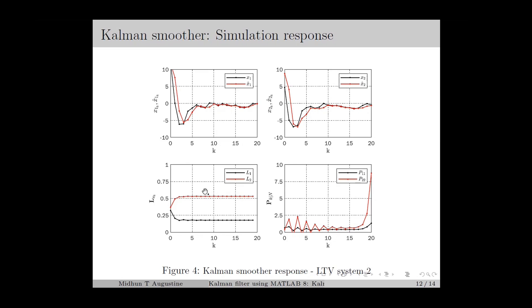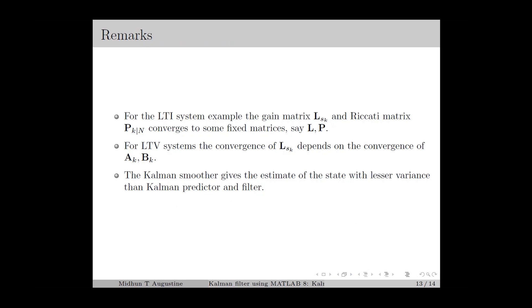The MATLAB code for the simulation can be downloaded from the link shown in the description. Finally, some remarks based on the simulation results: for linear time-invariant systems, the gain matrix Lsk and the Riccati matrix elements Pk|N converge to some fixed matrices L and P. Whereas for linear time-varying systems, the convergence of Lsk depends on the convergence of Ak and Bk. The Kalman Smoother gives the estimate of the state vector with lesser variance than the Kalman predictor and filter, but we cannot estimate the states in real time. Therefore, the Kalman Smoother is used for applications where real-time estimation is not required and is generally used for post-processing of the states.